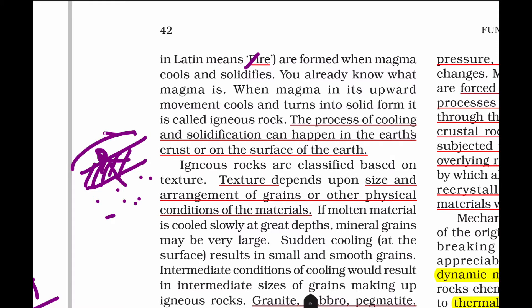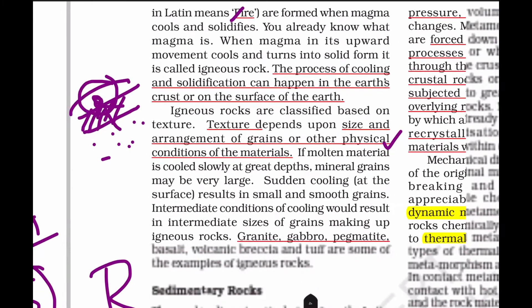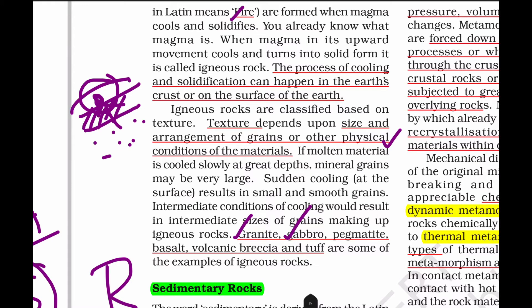Igneous rocks have various textures, sizes, and arrangements based on the physical conditions at the earth's surface. This is the primary rock. Examples of igneous rocks include granite, gabbro, pegmatite, basalt, volcanic breccia, and tuff.